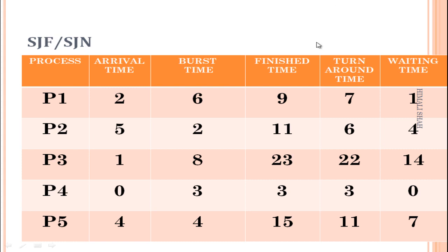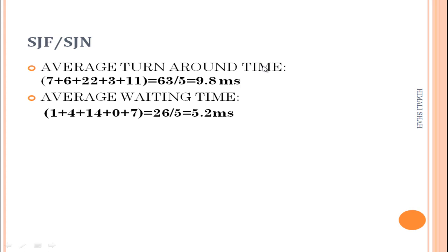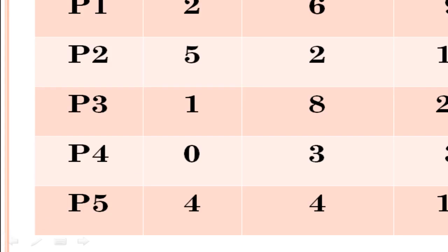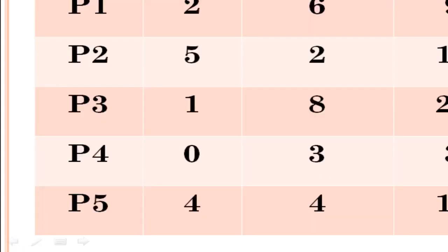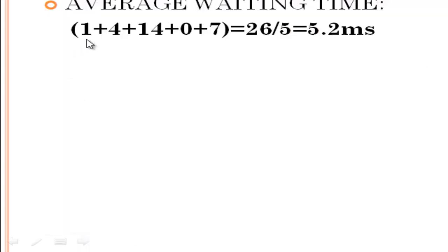Now for the average turnaround time: sum of turnaround times = 7+6+22+3+11 = 63, divided by 5 processes = 9.8 milliseconds. Average waiting time: sum = 1+4+14+0+7 = 26, divided by 5 processes = 5.2 milliseconds.